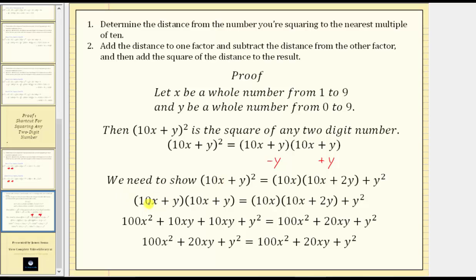On the left, we have two factors of the quantity 10x plus y, and we need to multiply out both sides of the equation. On the left side, when multiplying two binomials, we have four products: 10x times 10x is 100x squared, plus 10x times y is 10xy, plus y times 10x which is also 10xy, and then plus y times y which gives us plus y squared. On the right side, we distribute 10x: 10x times 10x is 100x squared, plus 10x times 2y is 20xy, and then plus y squared.